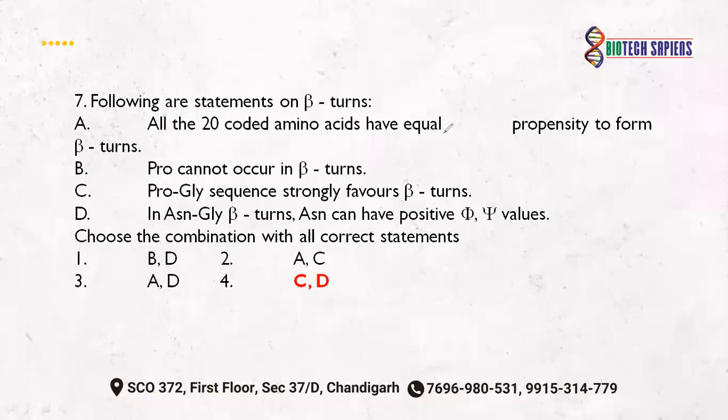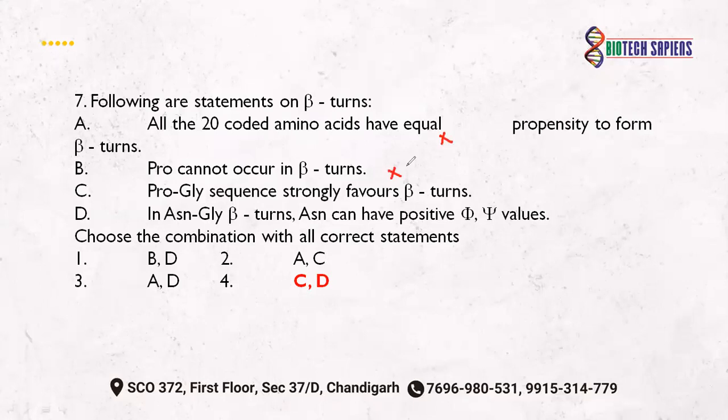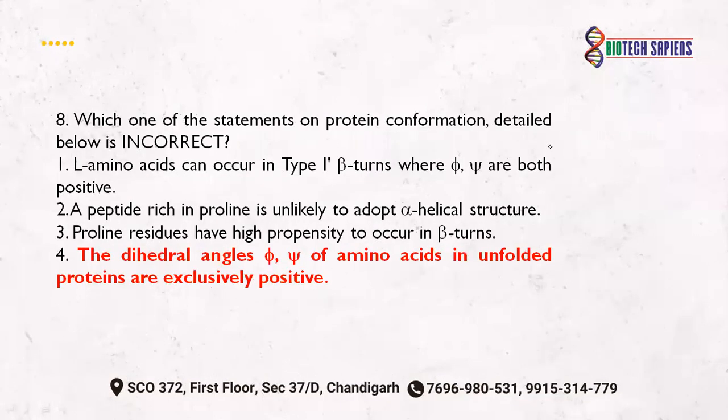The second statement says proline cannot occur in beta turns — this is also wrong; proline is actually present in beta turns. As seen in statement C: the proline-glycine sequence strongly favors beta turns — this is correct. Statement D: asparagine can have positive phi and psi values — asparagine within a glycine context can indeed have positive phi and psi values. So the correct answer among these combinations is C and D.